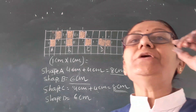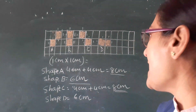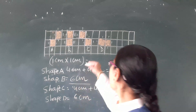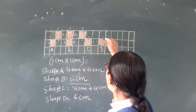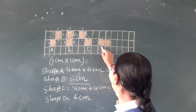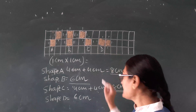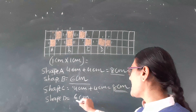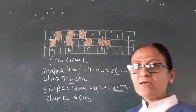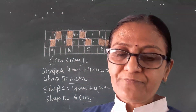Now if there is a shape D, for shape D there is again one diagonal line. Counting the boundary: 1, 2, 3, 4, 5, 6 — 6 cm is there for shape D. This was given in homework.